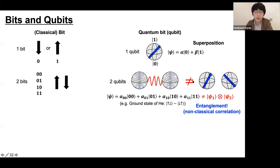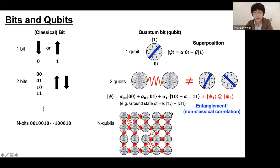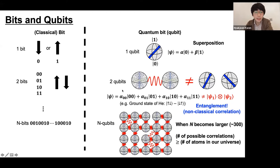This is common behavior in quantum systems. For example, in the ground state of helium, the two electrons are perfectly anti-correlated, pointing in opposite directions whatever angle you measure. If you go to n qubits, the number of possible correlations grows exponentially. When the number of qubits reaches around 300, the number of possible correlations will exceed the number of atoms in our universe. This explains why it is hard to simulate quantum systems and gives a clue as to why quantum computers can perform faster computations.